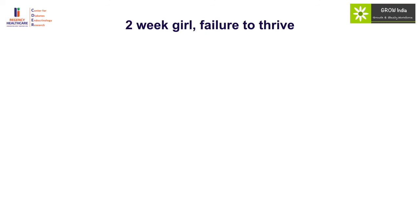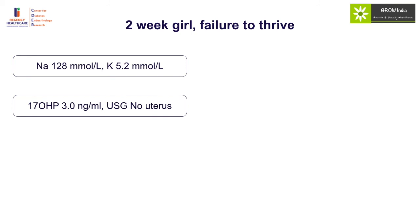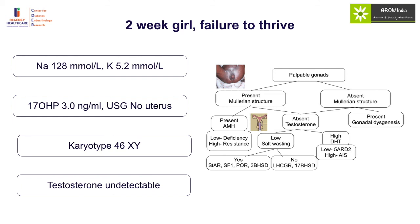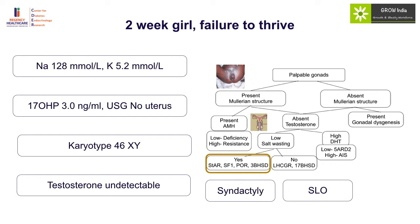A 2-week-old girl with failure to thrive, sodium 128, potassium 5.2, 17-OHP normal, ultrasound showing no uterus — salt wasting forms of congenital adrenal hyperplasia are excluded. Karyotype is XY — XY DSD with salt wasting. Testosterone is undetectable. Müllerian structures are absent with low testosterone and salt wasting, indicating a combined steroidogenic defect: STAR, SF1, oxidoreductase, or 3-beta-HSD. In this case, syndactyly was found, confirming a diagnosis of Smith-Lemli-Opitz syndrome.